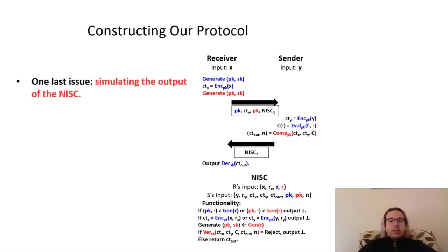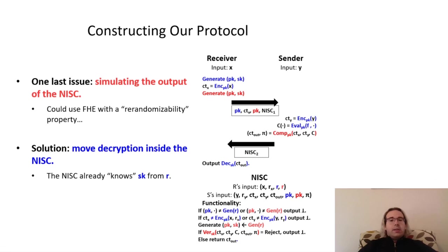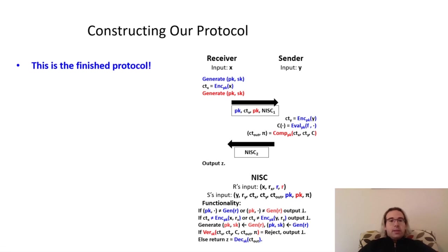Now that the sender's and receiver's messages are verified, the final issue to deal with is that the output from the inner protocol might not necessarily be simulatable for the purposes of the security proof, since we don't know the distribution of output ciphertexts that might be returned by the homomorphic evaluation and thus output by the inner protocol. Instead of using FHE with a re-randomizability property, we make use of an observation similar to that from the last slide: since the inner protocol knows the randomness used to generate the FHE keys, it can in fact generate the secret key and decrypt the output itself. So, we simply move the decryption inside the inner protocol and let the receiver obtain the decrypted output if all of the verifications are successful. With all of these issues dealt with, we've arrived at the final version of our protocol for which we formally proved security in our paper.